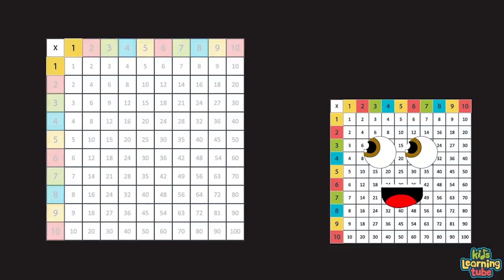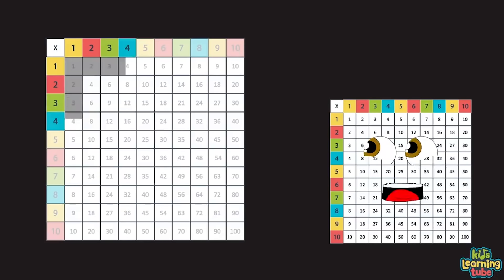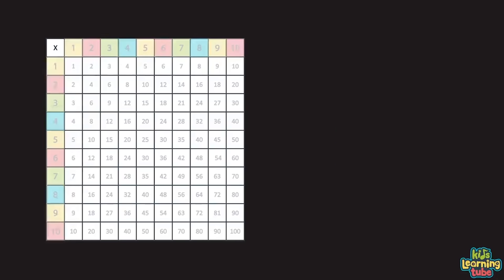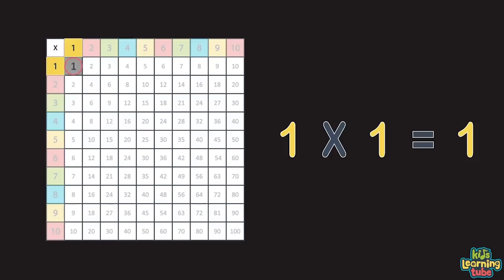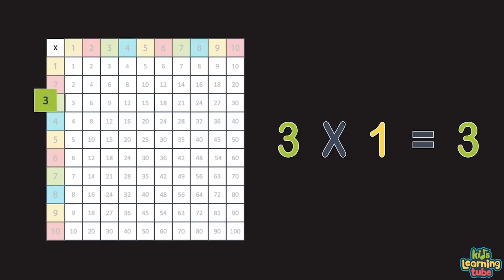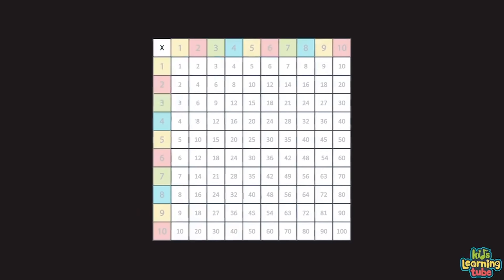Multiplying by one is so easy. You always end up with the same number you multiply by. One times one equals one. And two times one is two. And three times one equals three. Now you practice too. Move to two and count straight across: two, four, six, eight, ten. Start over if you're lost.